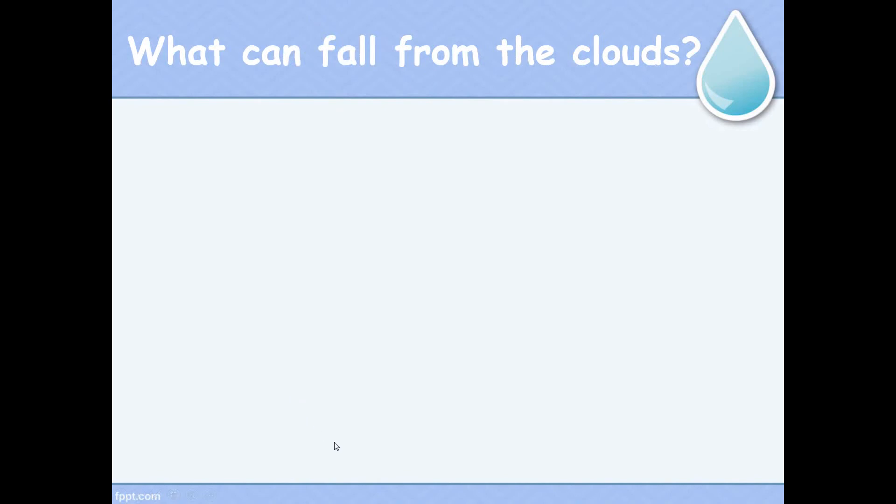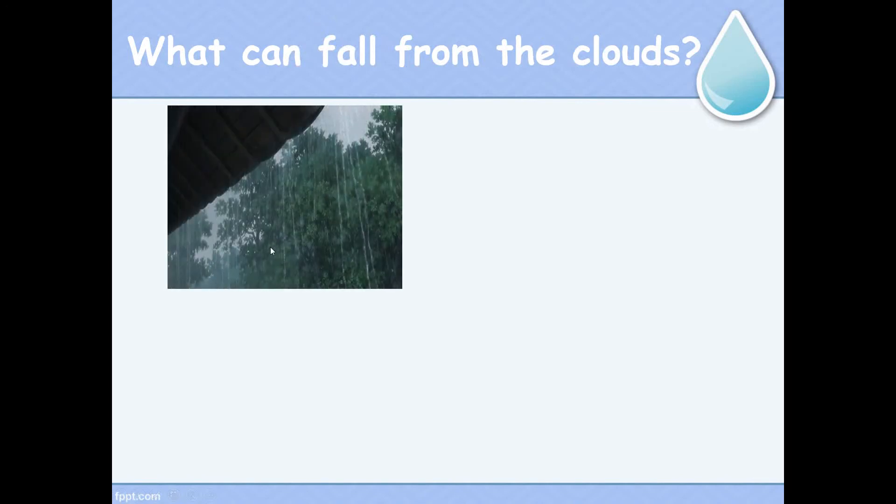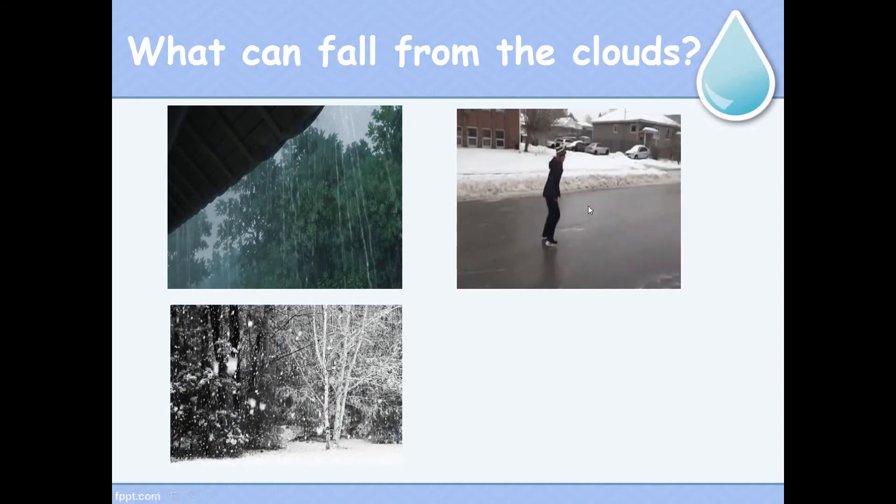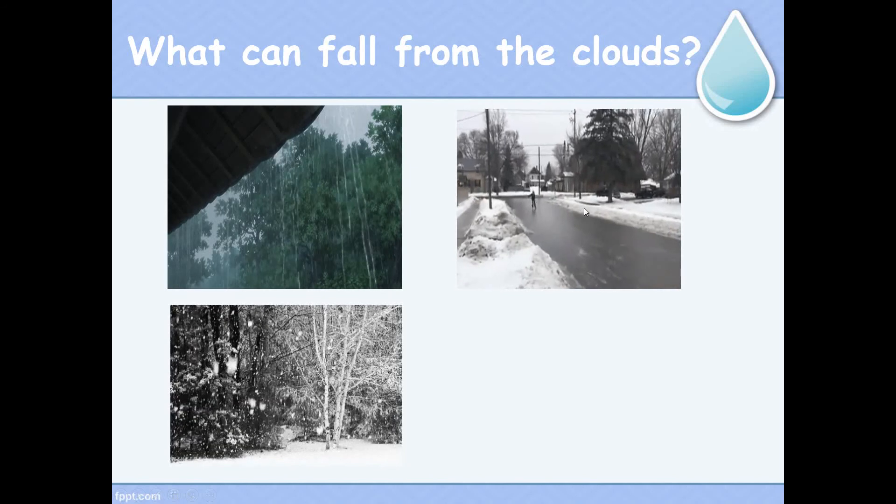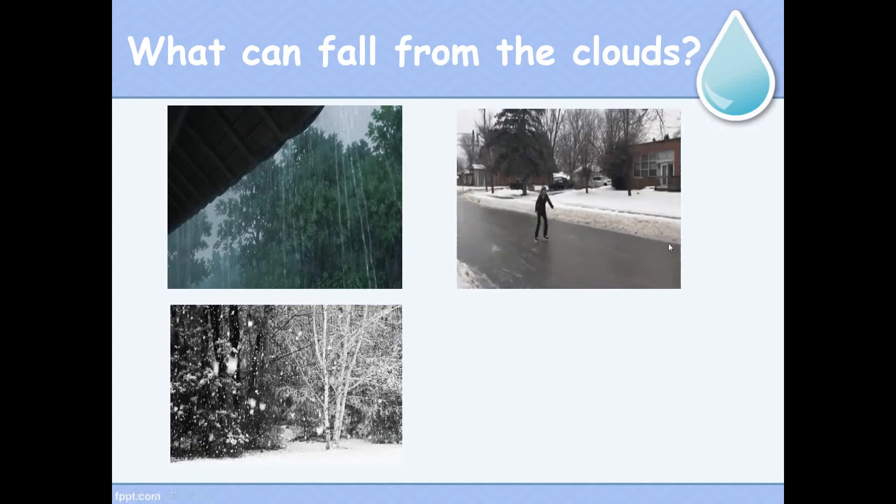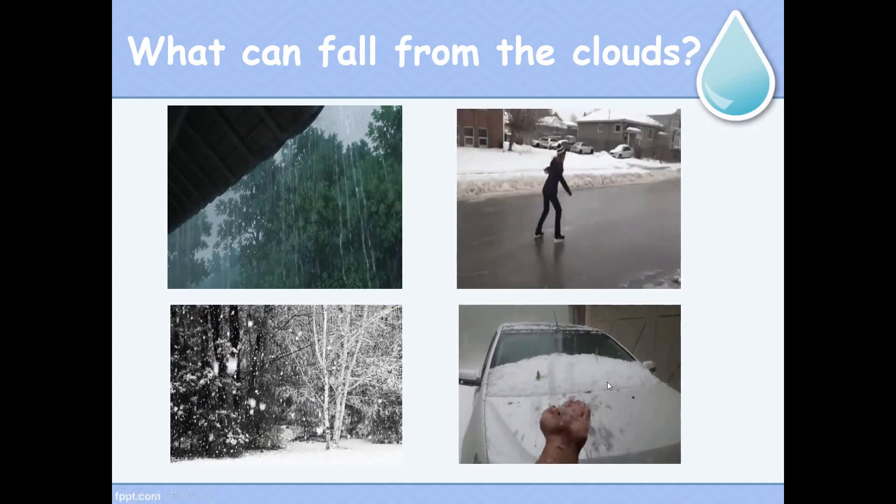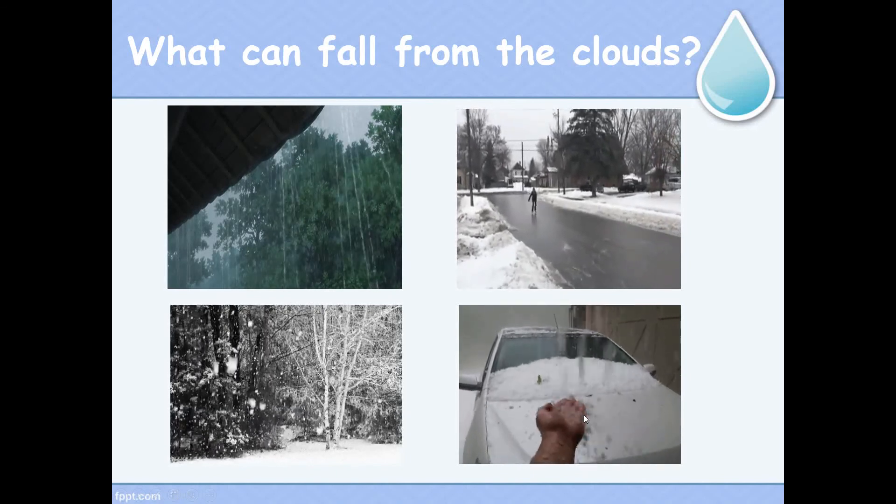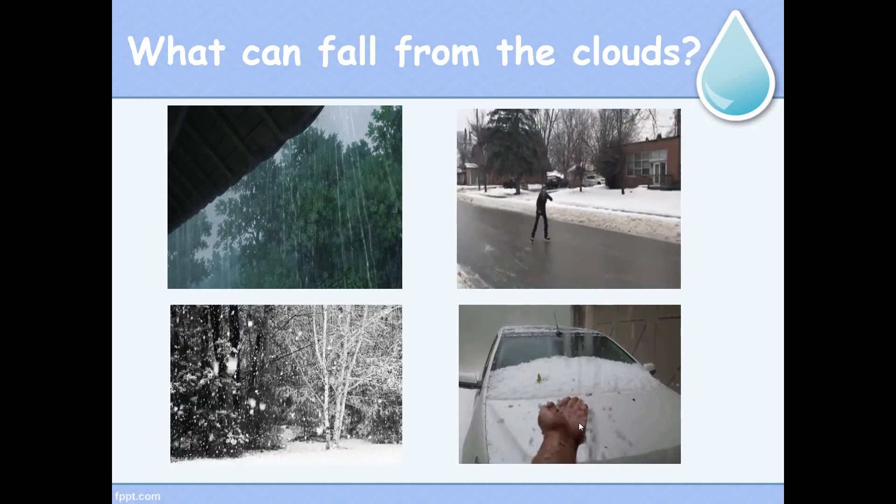Now what can fall from the clouds? Yes, rain. Rain is drops of water. What also? Snow. Snow is soft white flakes of ice. We have also sleet. Sleet is frozen rain. It's slushy and can be slippery if you walk on it. Hail. Hail can be big or small lumps of ice. Hail could be dangerous if it falls on people or their cars.